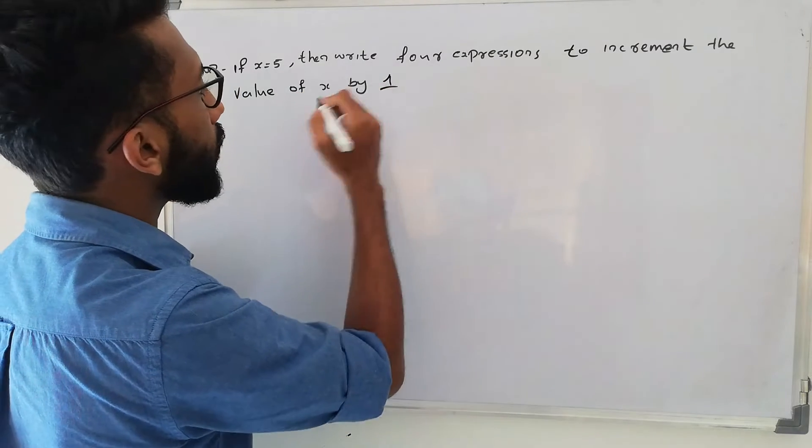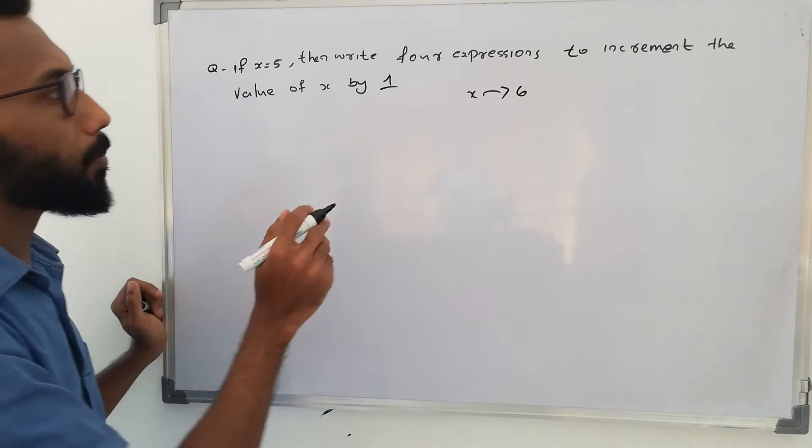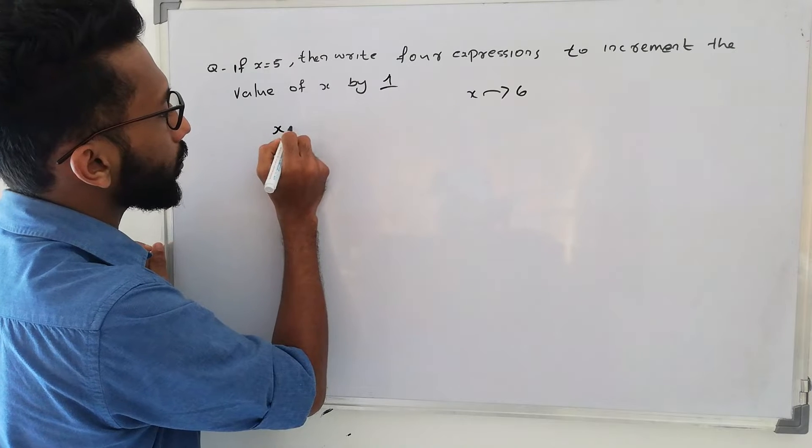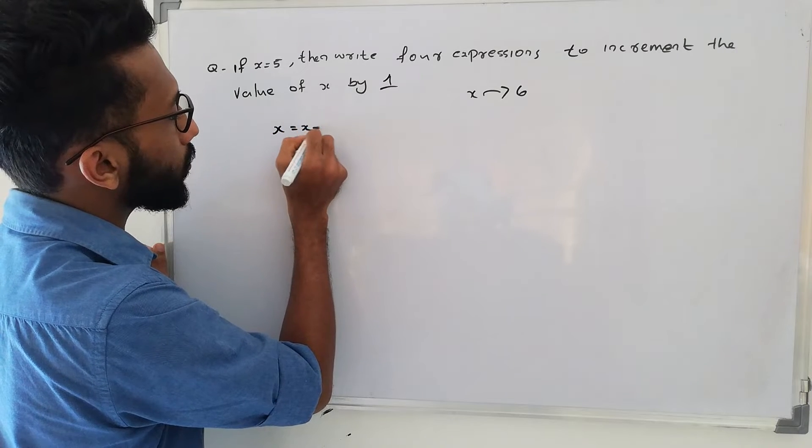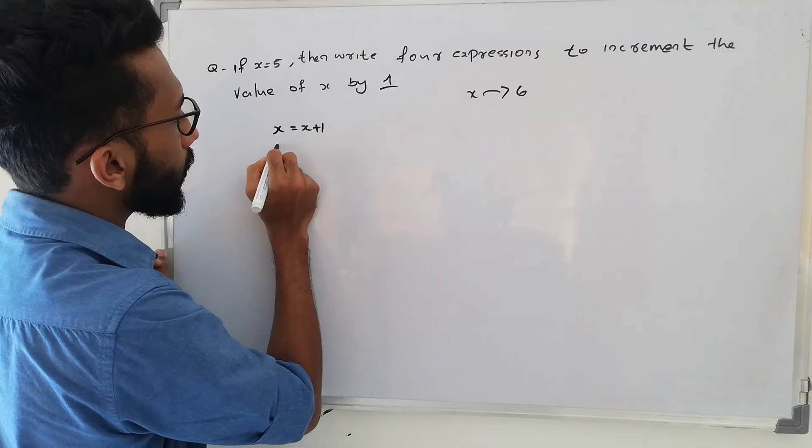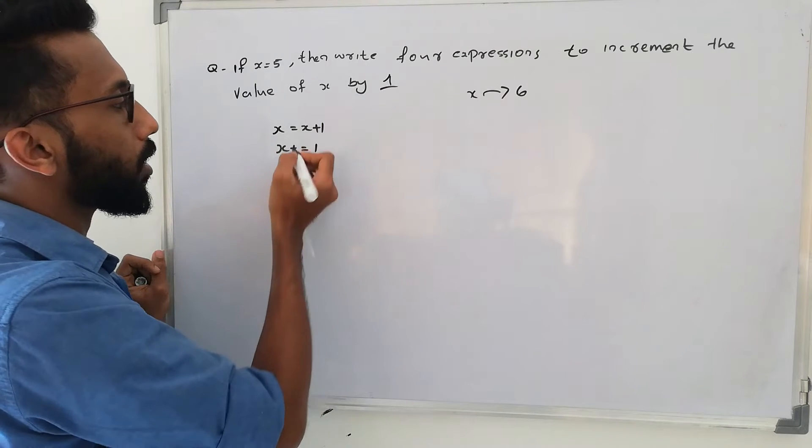If x is equal to 5, then x is equal to 6. We will write 4 expressions. I will write x is equal to x plus 1. We will write x plus equal to 1.